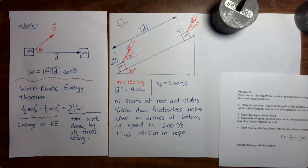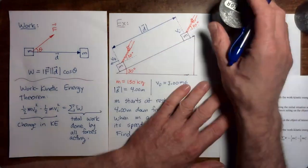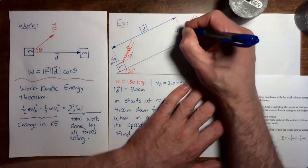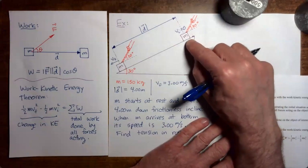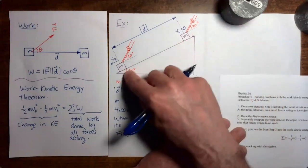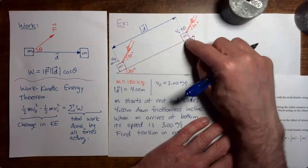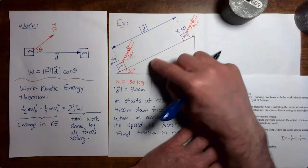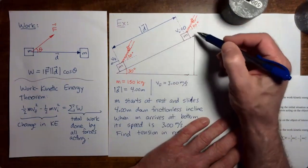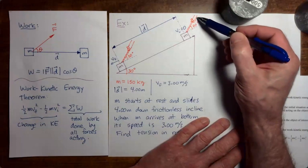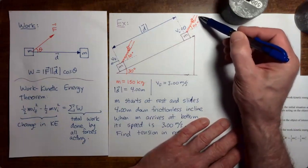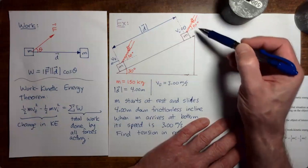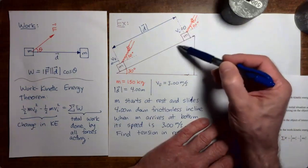Here is the problem we're going to be working on. We have a mass which starts at a speed of zero at the top of an incline, and this mass is going to start sliding down the incline. As the mass is sliding down the incline, we have a rope attached to the mass, and up here we have somebody pulling on the rope, trying to control the mass so that it does not slide down the incline.